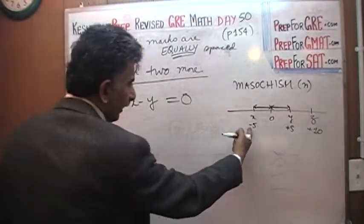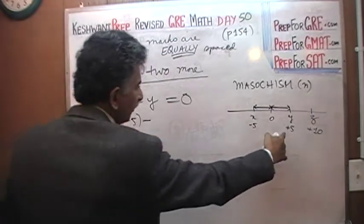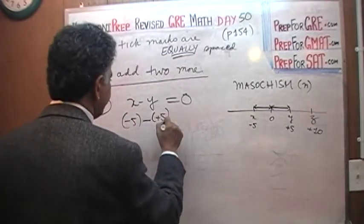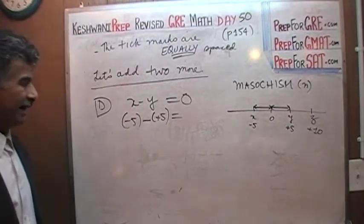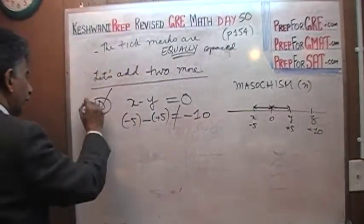That is not true here. Watch. We are going to plug in number. Our X is negative five minus a Y, which is a positive five. So X minus Y turns out to be a negative ten. It is not zero. This statement is false.